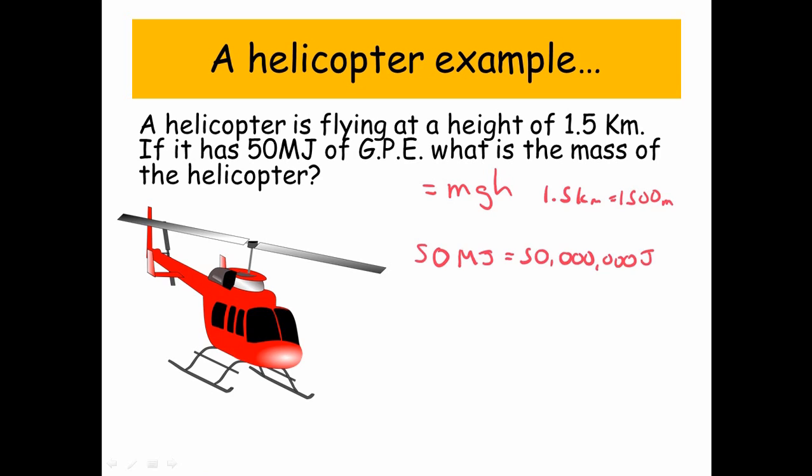Okay, the 50 mega joules, so that prefix mega, that means a million. So we've got 50 million joules. And then let's just put this all into our equation. So 50 million joules is equal to the mass, which we don't know, times by gravitational acceleration, 10, times by the height, which is 1,500.